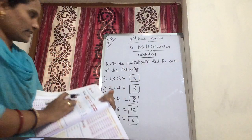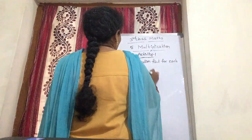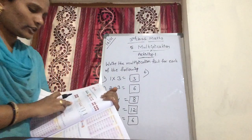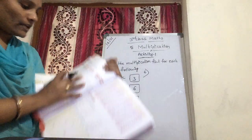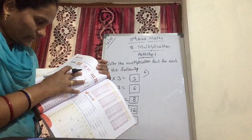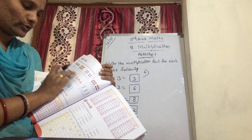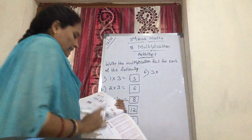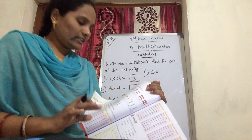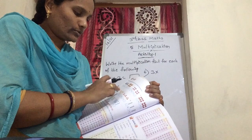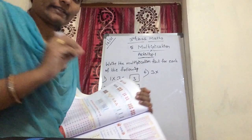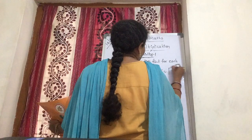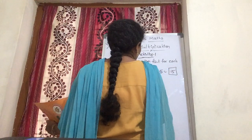Now, next. Sixth one. Here, bangles — how many groups? 1, 2, 3 — three groups. So, 3 into... Each group, how many bangles? 1, 2, 3, 4, 5 — each group has 5. So, 3 into 5 is 15. Total 15. Counting children — total 15.